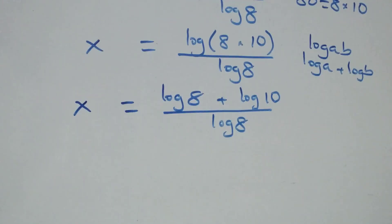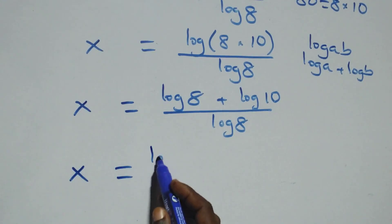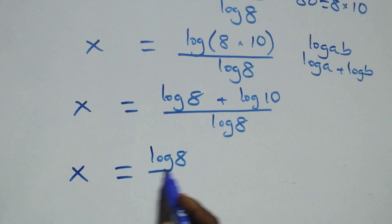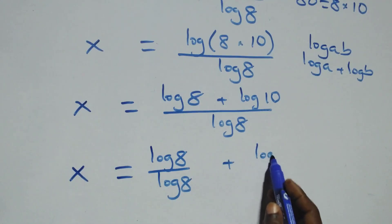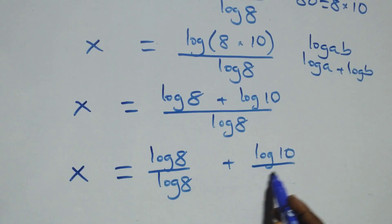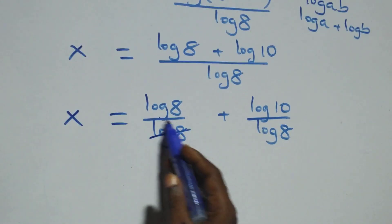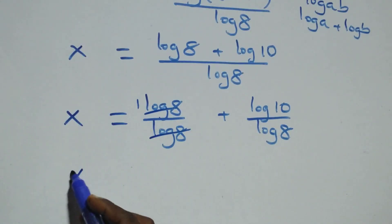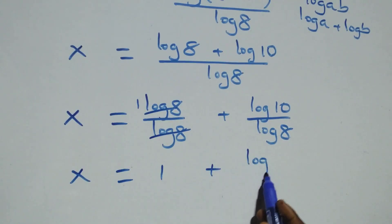We separate this into two fractions: x equals log 8 over log 8 plus log 10 over log 8. Log 8 cancels in the first fraction, leaving 1. So x equals 1 plus log 10 over log 8.